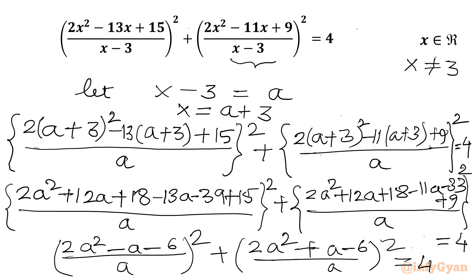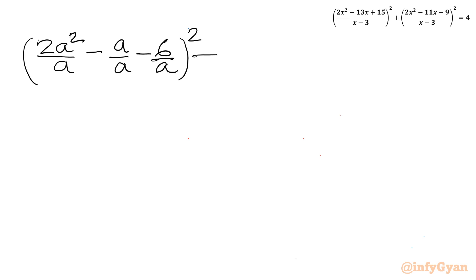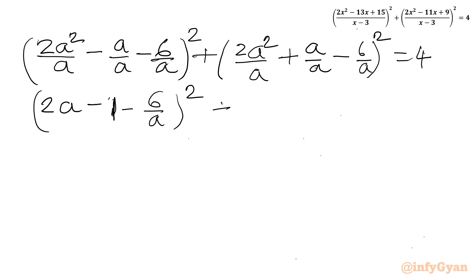RHS is 4. Now I will divide through by a from the denominator. So I write: 2a²/a - a/a - 6/a, whole squared, and in the second bracket: 2a²/a + a/a - 6/a, whole squared, equal to 4. This gives: (2a - 1 - 6/a)² + (2a + 1 - 6/a)² = 4.